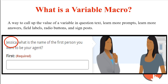Starting with variable macros, let's talk about what they are. They are a way to call up the value of a variable in the question text, a learn more — both the prompt and the help — in field labels, radio button labels, and signposts. You can use information the end user has already given you to personalize the information, remind them of past answers, or specify when they are making a follow-up choice.